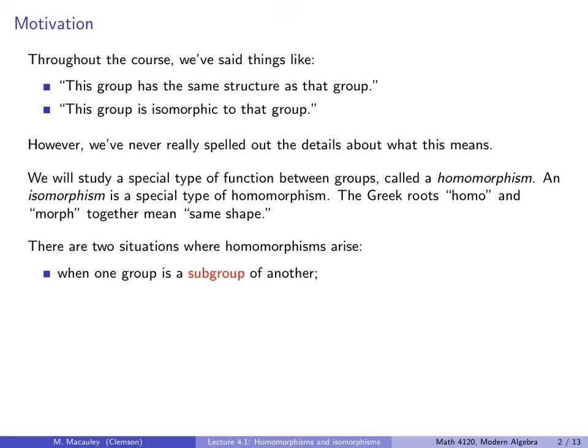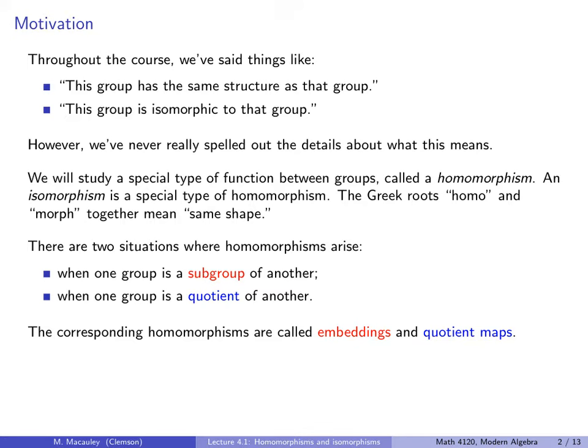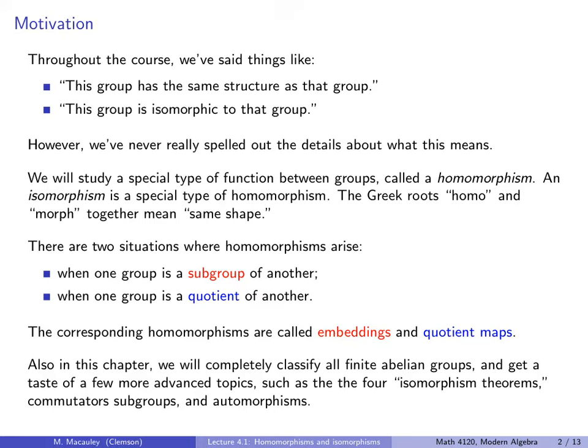There are two situations where homomorphisms arise. The first is when one group is a subgroup of another. The second is when one group is a quotient of another. The corresponding homomorphisms are called embeddings and quotient maps. Also in this chapter — starting with lecture 4.1 up to around lecture 4.6 or 4.7 — we will completely classify all finite abelian groups and get a taste of more advanced topics such as the four isomorphism theorems, commutator subgroups, and automorphisms.